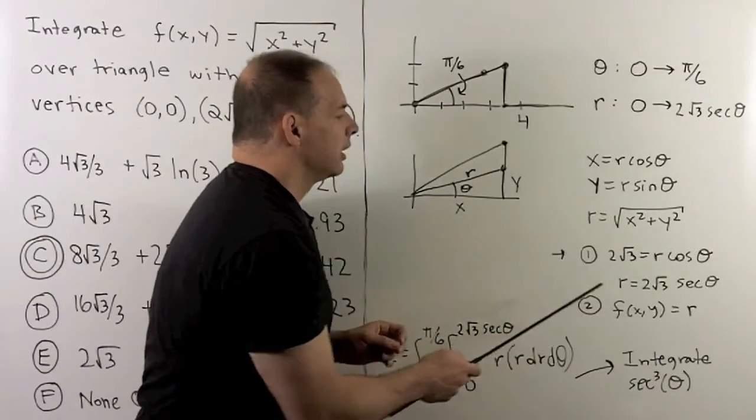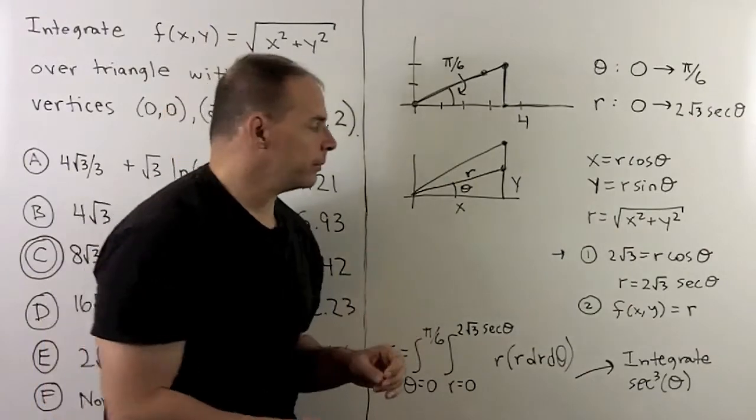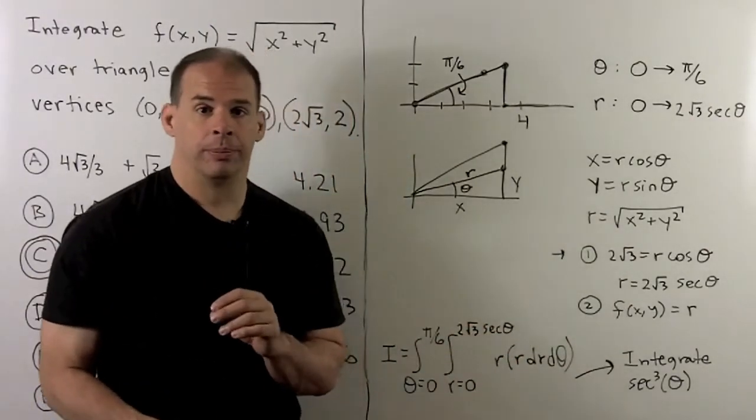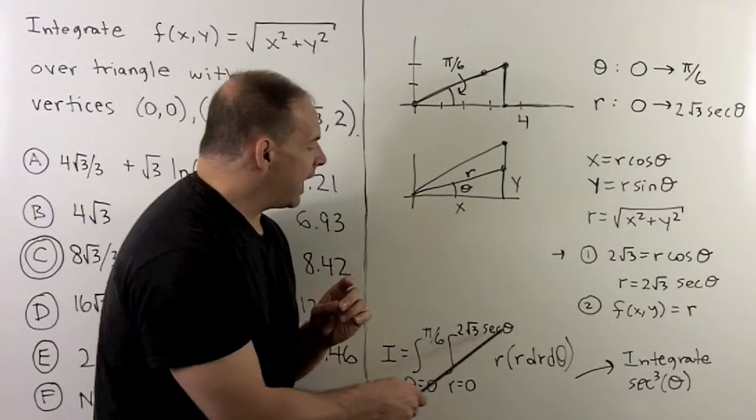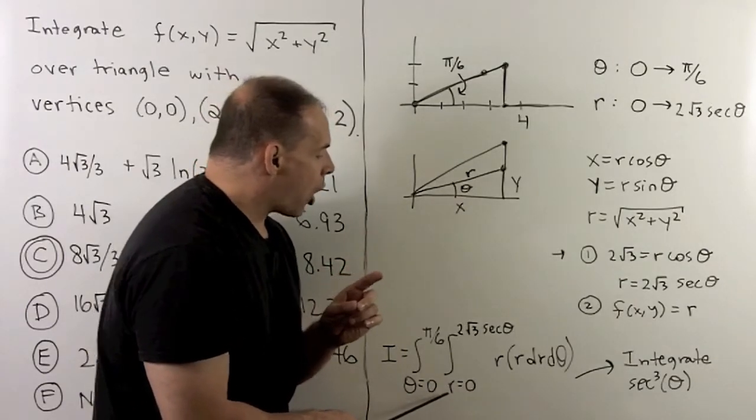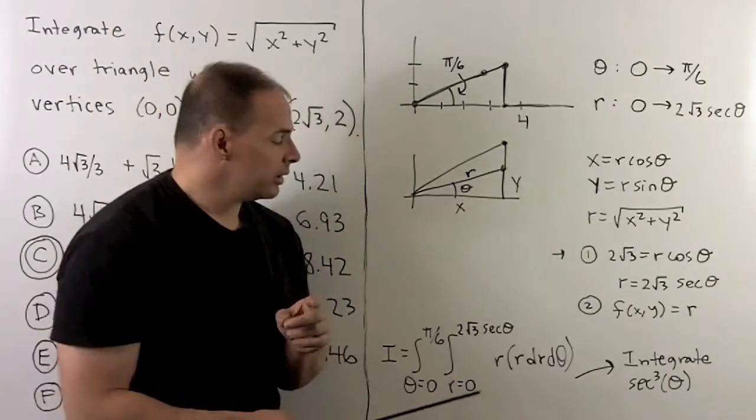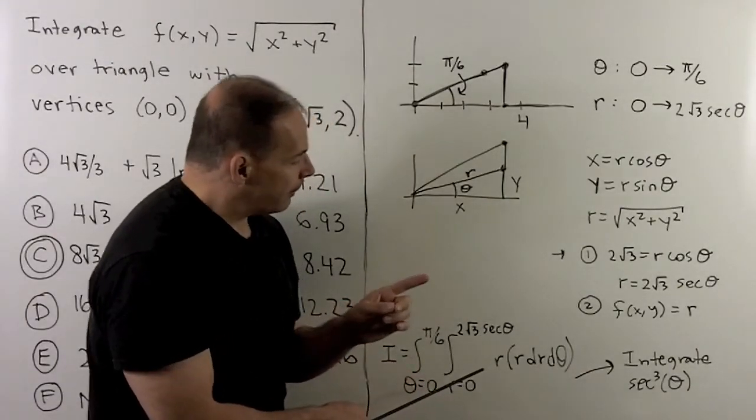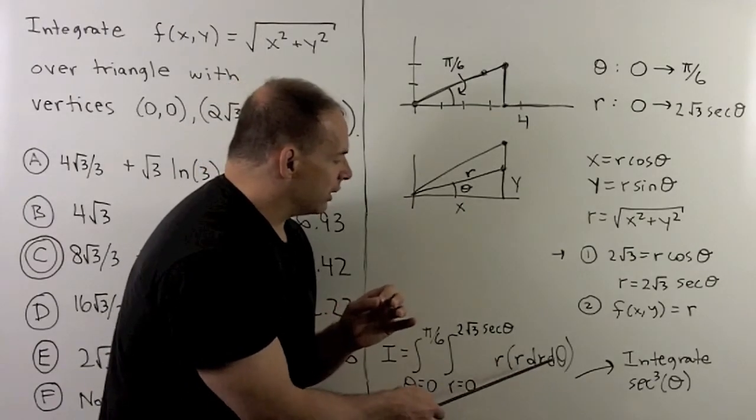For our function, square root of x squared plus y squared, which is just r in polar coordinates. Now I have everything I need to set up our integral. For our limits, note r is going to depend on theta, so that's going to be the inner integral. The idea is going to be when we integrate, we're going to take the r out of the integral completely. Everything left over should be a theta.